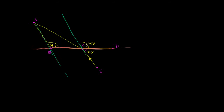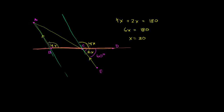We see that the 4x angle and the 2x angle are supplementary — they're adjacent, their outer sides form a straight angle, so their measures add up to 180 degrees. So 4x plus 2x equals 180, giving us 6x equals 180. Divide both sides by 6: x equals 30. Therefore the 2x angle is 60 degrees, and the 4x angle is 120 degrees. And we're done.